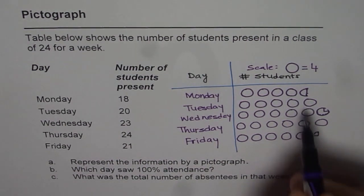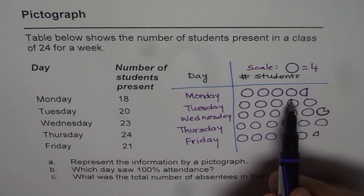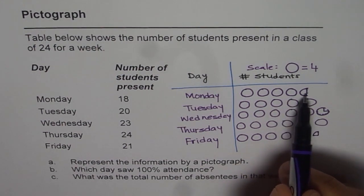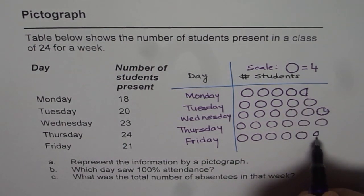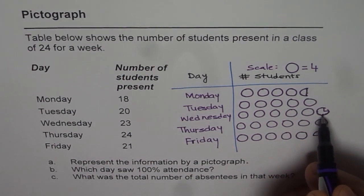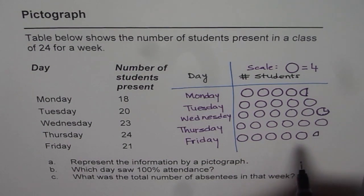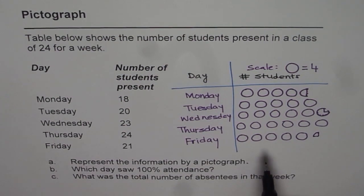So as you can see from here, 1 full circle represents 4, half circle represents 2, just a quarter represents 1, and 3 quarters represents 3. So that is how we can represent this data with the help of a picture.